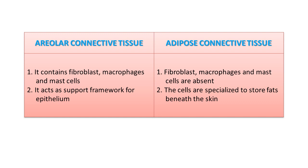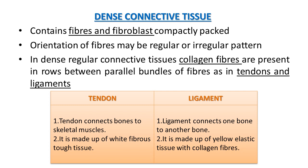Both areolar and adipose are types of loose connective tissue. Dense connective tissue contains mainly fibers and fibroblasts which are compactly packed. The orientation of fibers may be regular or irregular. In dense regular connective tissue, collagen fibers are present in rows between parallel bundles of fibers, as in tendons and ligaments.